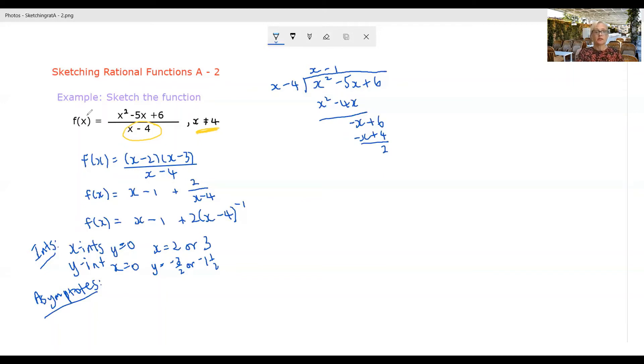If we're coming in, just look at this very original function. If we're coming in from above, so as x is tending towards four from above, so we're just a little bit bigger than four.